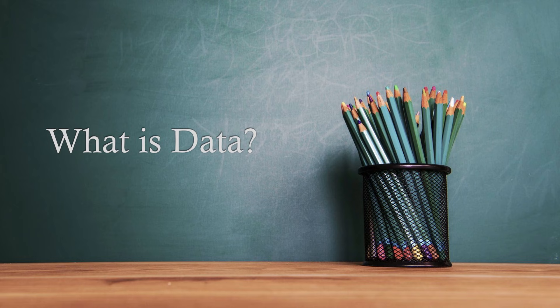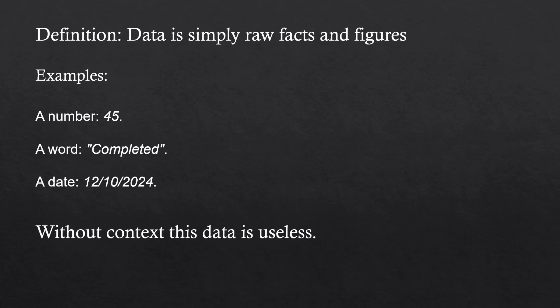In this lesson, we're going to be talking about what data is. We're starting from the very basics and working our way up through this series. By definition, data is just raw facts and figures. It doesn't even necessarily have to be on a computer — it could be on a notepad. If you're writing down one, two, three, four, five, that is data. That's going to be harder to use, but on a computer it's easier to process and use data.